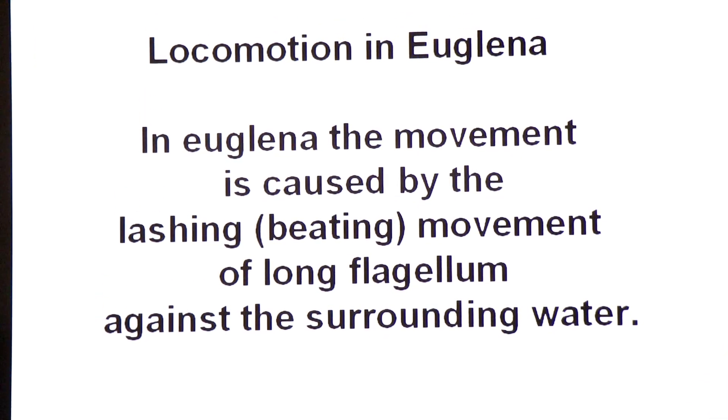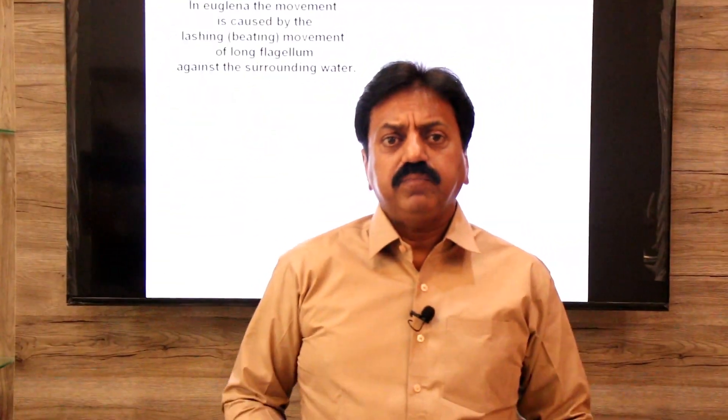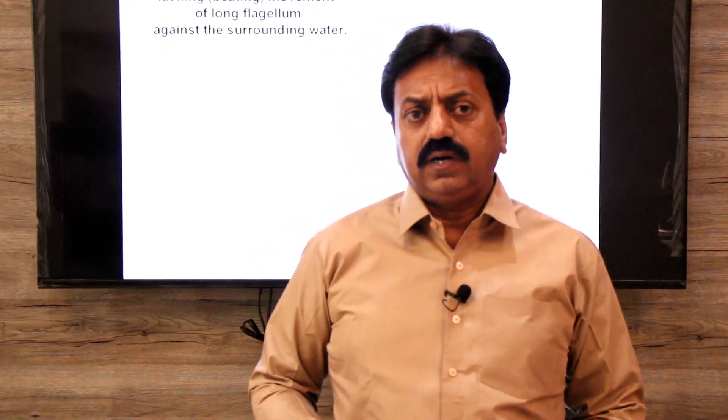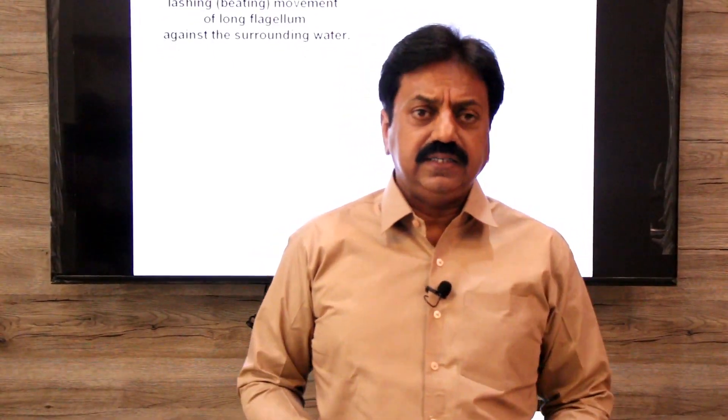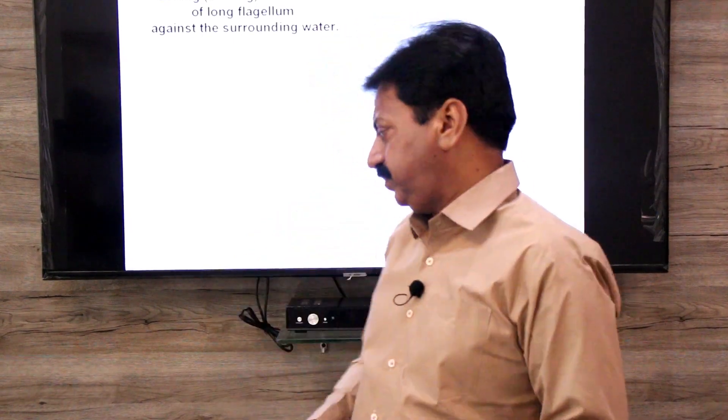Dear students, Euglena is a unicellular organism belonging to kingdom Protista. It is an aquatic organism, and its locomotion in water is achieved by means of a long flagellum.